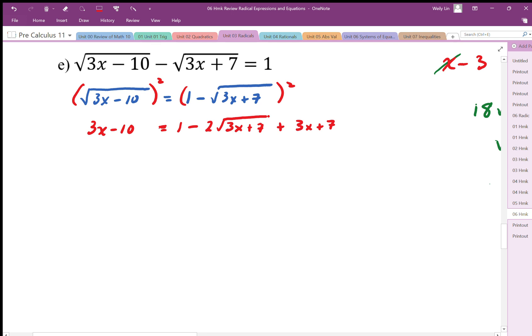So then we need to isolate that square root. So I'm going to add it to both sides. On the left hand side is going to be the positive 2 square root 3x plus 7. And on the right hand side, we're just going to combine our like terms. So I'm going to add up my 8. And then I'm going to add 10 to both sides from the minus 10 on the left hand side. So I get 18.